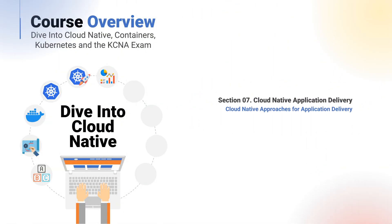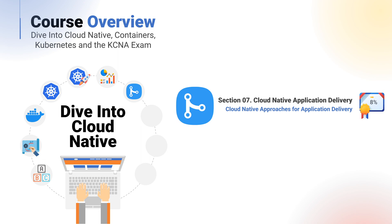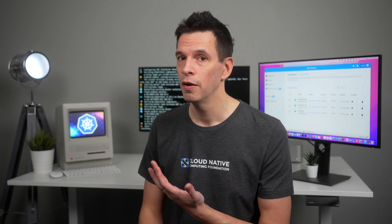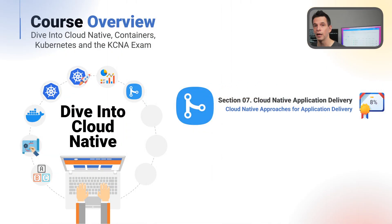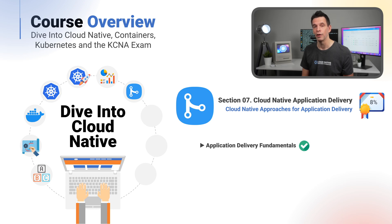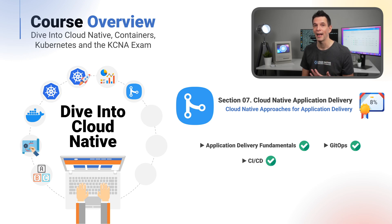Lastly, section seven: cloud native application delivery. Another one which is 8%, but again, don't overlook this. These are essential skills — think of them as the scaffolding around your container orchestration. In this section we'll be covering application delivery fundamentals, GitOps, CICD, and we're also going to take a look at Argo, which is another absolutely fantastic tool.